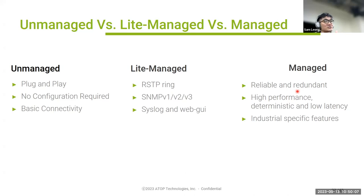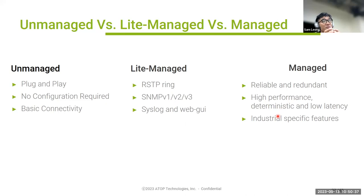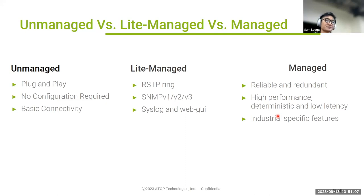There are also industrial-specific features like modular switches. For substation applications, for example, modules can support HSR and PRP — these can be swapped on the switch itself. Advanced products also have dual power supplies and different voltage input ranges for different applications. The combination of features you pick depends on your budget.